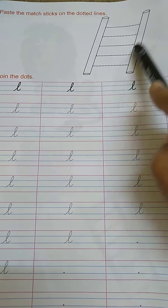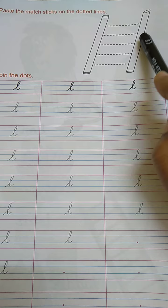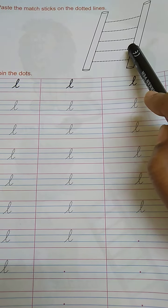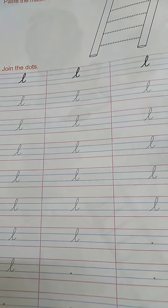Now can you tell me what picture is this? This is a picture of ladder and ladder starts with the sound L. Isn't it? Yes. Now let's see how to write the cursive letter L.